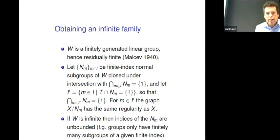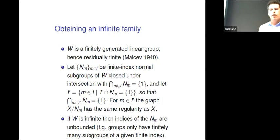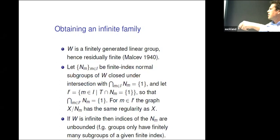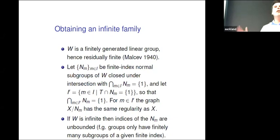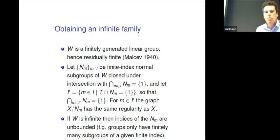Because W is a Coxeter group, it's residually finite: whenever an element is non-trivial, there will be a finite index normal subgroup that does not contain it. Also, the intersection of all of these is trivial. If you restrict to I', the set where you have thrown away the bad ones, then in that set the regularity will be preserved. I have my infinite set, I throw away finitely many, and for the rest regularity is preserved. And importantly, if W is infinite, the indices of these normal subgroups will be unbounded — since there are only finitely many subgroups of a given finite index, it must keep going.